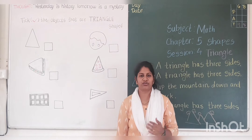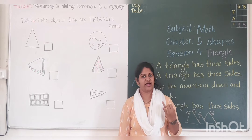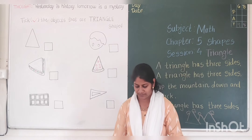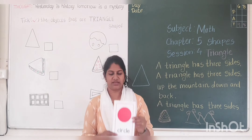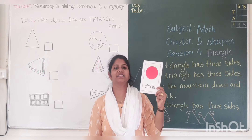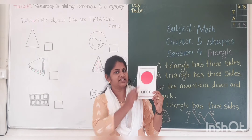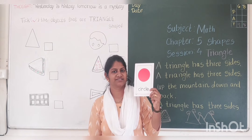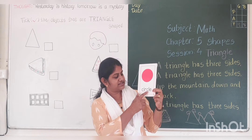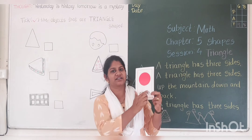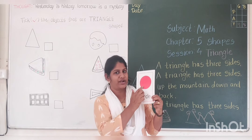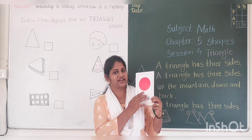In last lesson I taught you circle and square, and today I am going to teach you triangle. Can you tell me which shape is this? This is a circle, and which color is this? This is red color. C-I-R-C-L-E, circle. No corners and no sides. This is circle.